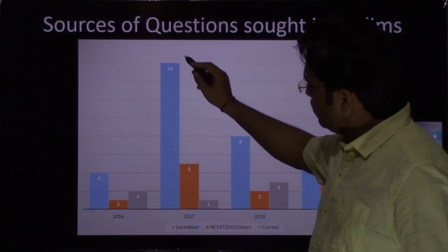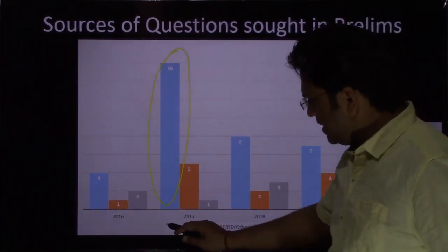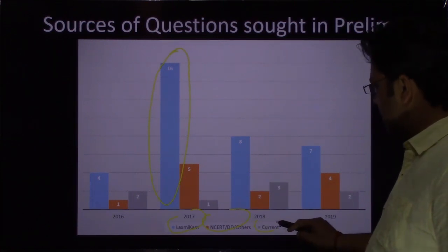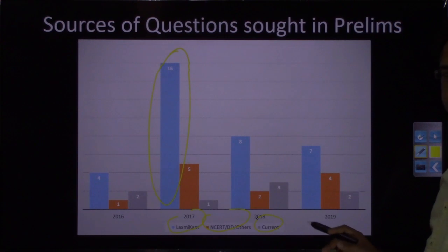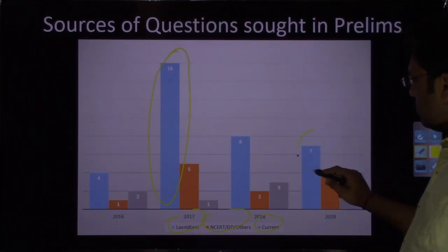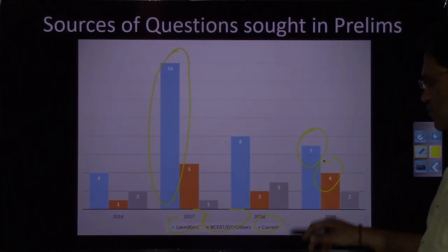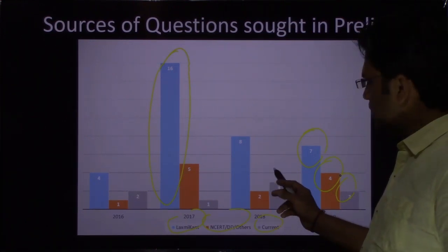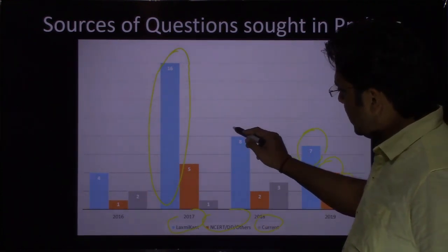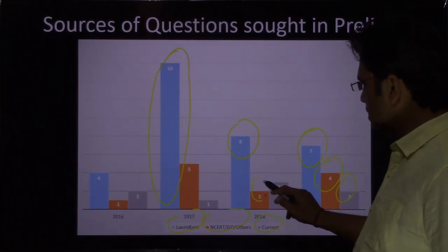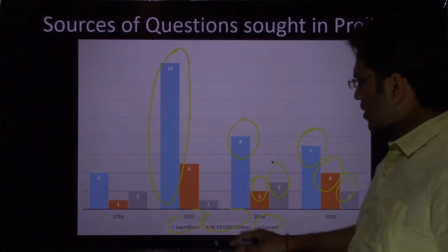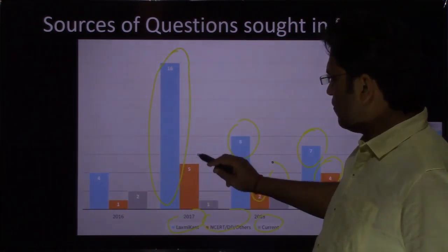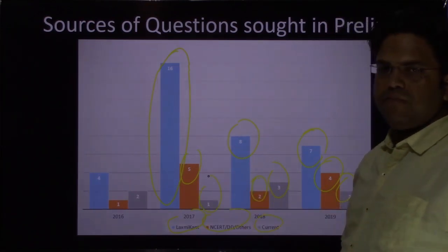In this slide you can see: the blue bars are for Lakshmikant — look at the legend — blue for Lakshmikant, orange bars for NCERT and DD Basu, and the gray bars are from current affairs. In 2019, there were 13 questions from Indian polity: 7 from Lakshmikant, 4 from DD Basu and NCERT, and 2 from current affairs. In 2018, again 13 questions: 8 from Lakshmikant, 2 from DD Basu and NCERT, and 3 from current affairs. In 2017, there were 22 questions: 16 from Lakshmikant, 5 from DD Basu and NCERT, and 1 from current affairs.